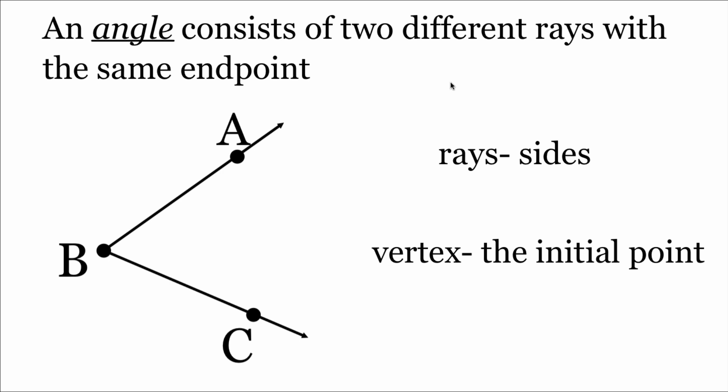When we're talking about angles, angles are built from two different rays that have the same endpoint or a common endpoint. So if we're looking at this picture, we've got the ray that runs from B to A and a ray that runs from B to C. Those rays make up the sides of our angle. That common initial point or endpoint B in our picture, we would call the vertex. That's like the point of our angle.